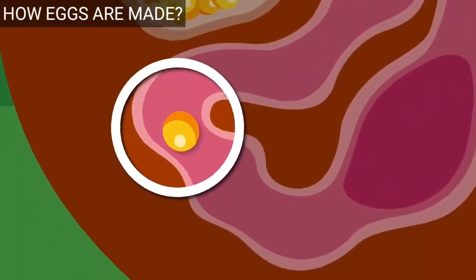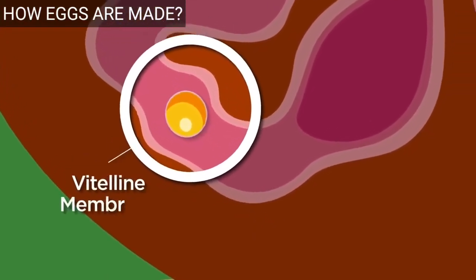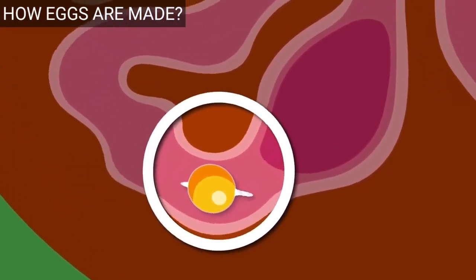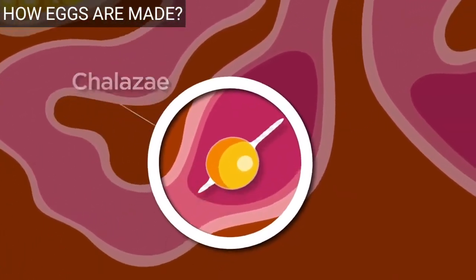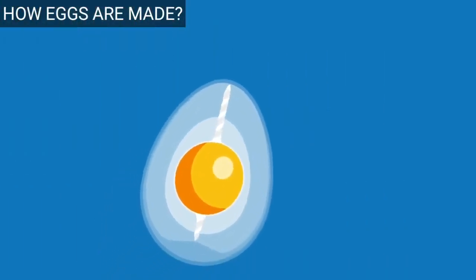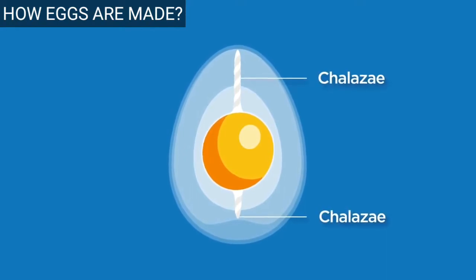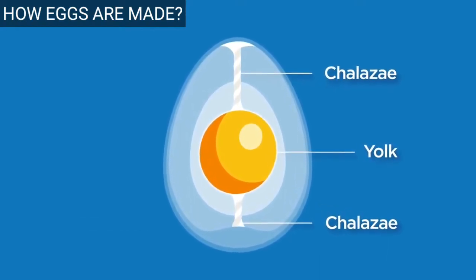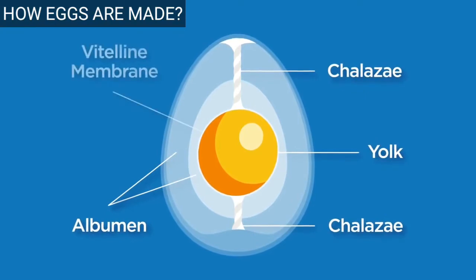As the yolk travels down the oviduct, it is covered by the vitaline membrane. Also added are the fibrous proteins chalazae and layers of albumin or egg white. As the egg continues, it spins, which twists the chalazae that forms strands on either end of the yolk, anchoring it in the egg white and in the center of the egg.